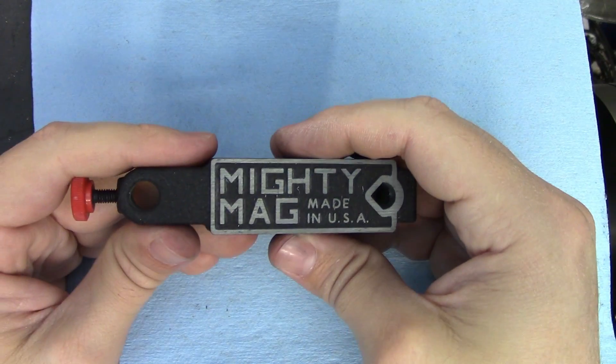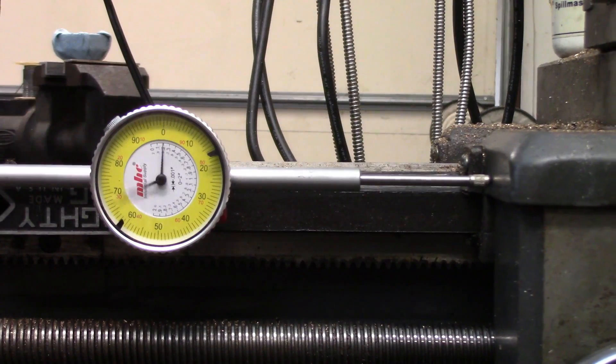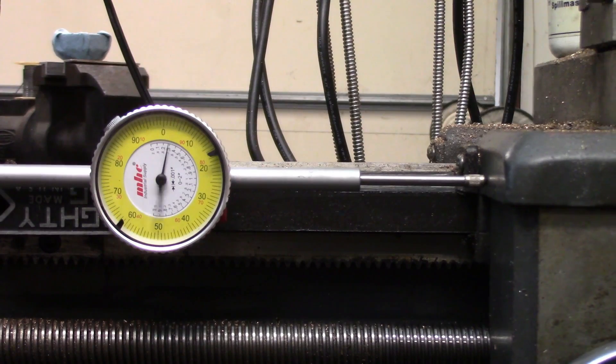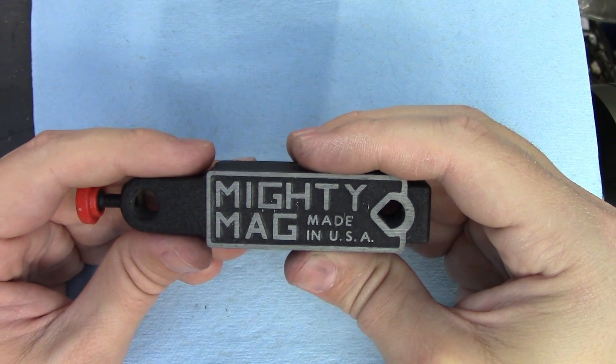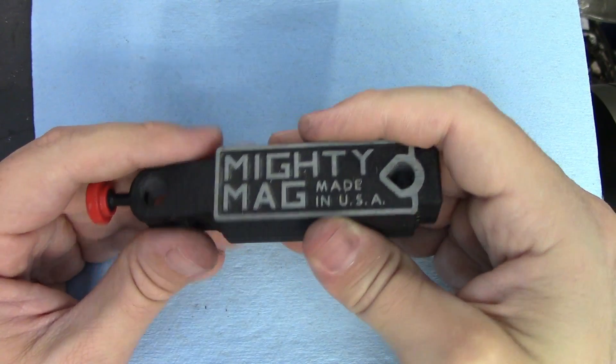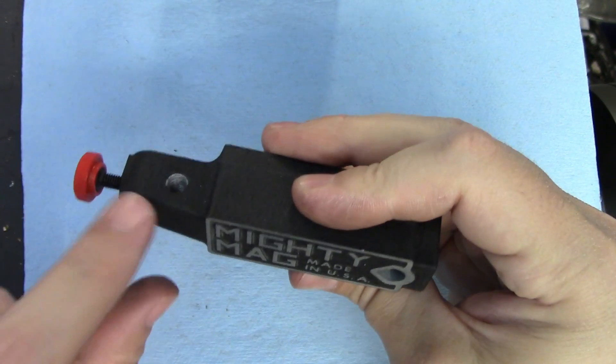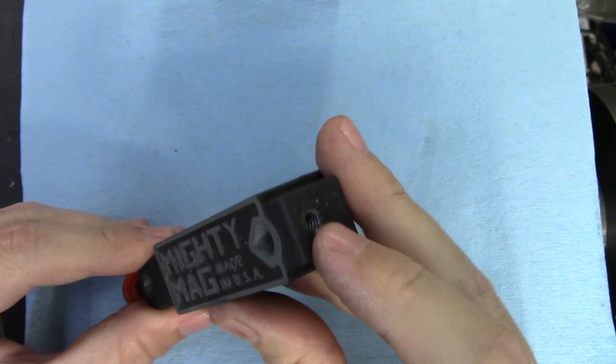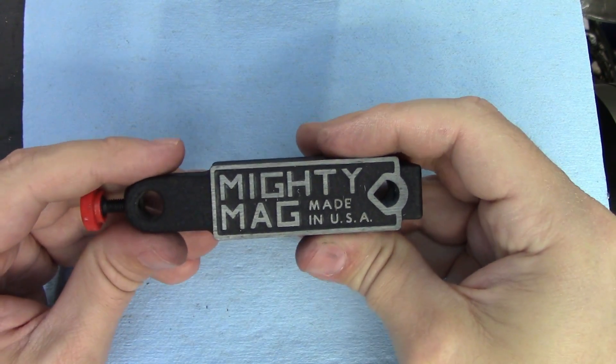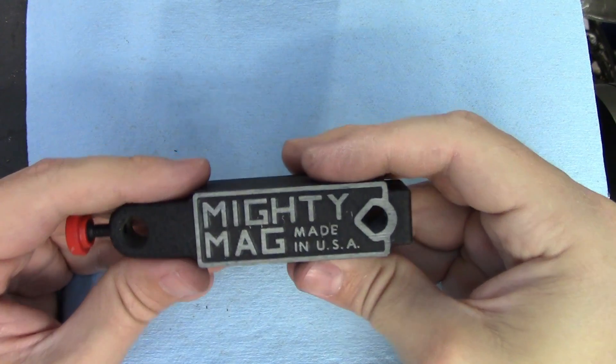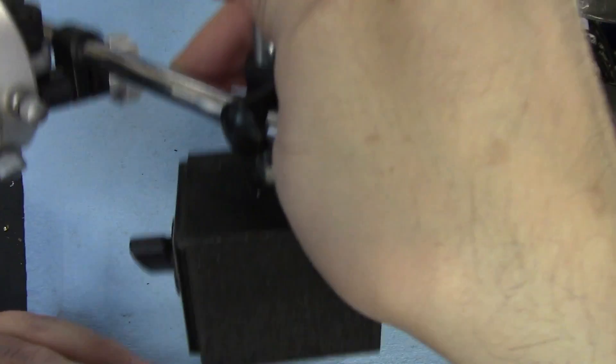For now I want to show you more about these Mighty Mag bases. I use these to measure travel on a machine and they are really simple and cheap. There are several different spots to mount indicators on them depending on your needs. You can screw the indicator lug to the tapped holes on either side or the end. There's also a reamed hole in this end that fits the shank of that type of indicator or a rod of that diameter to act like one of these indicator bases.